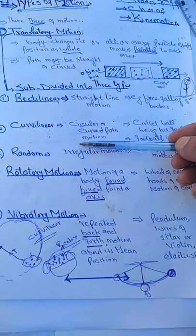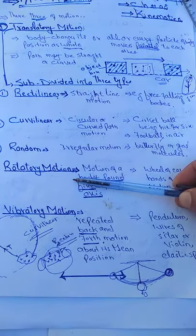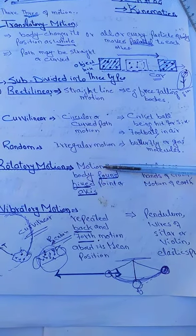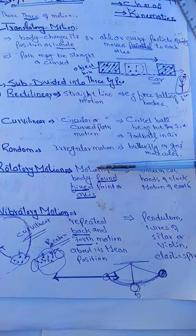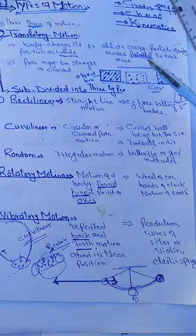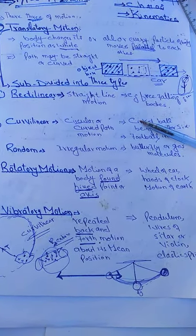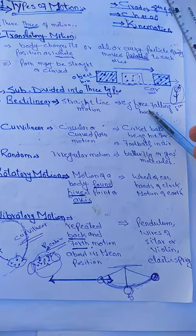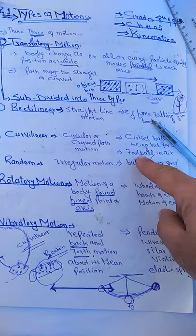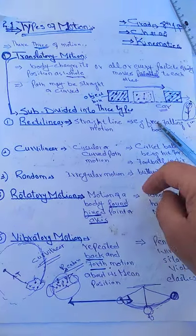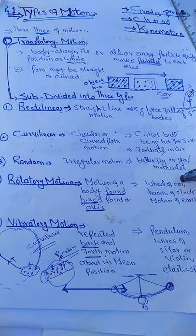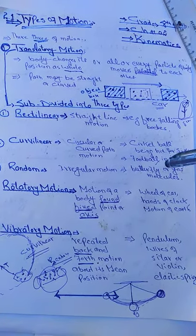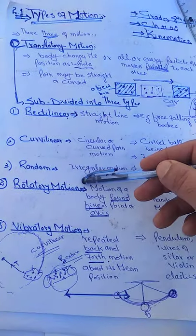Now we go to rotatory motion. Rotatory motion is that type of motion in which a body moves around a fixed point or axis. An easy example is the motion of the Earth around the Sun - different planets move around the Sun, which is the fixed point. This type of motion we call rotatory motion. Another example is the hands of the clock, or the revolution of an electron around the nucleus.